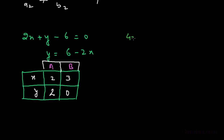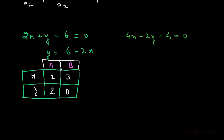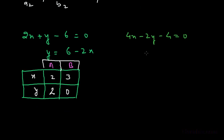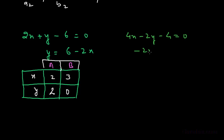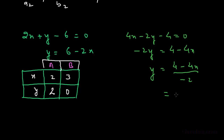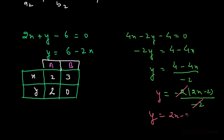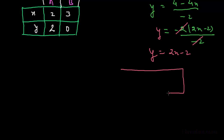Now we take the second equation: 4x − 2y − 4 = 0. Writing y in terms of x: −2y = 4 − 4x, so y = (4 − 4x) / (−2), which simplifies to y = 2x − 2.